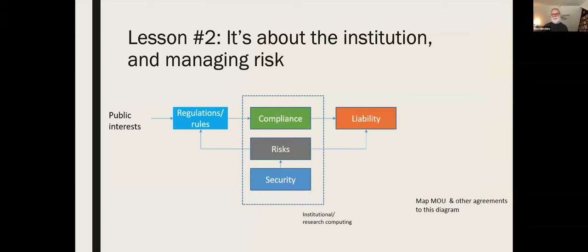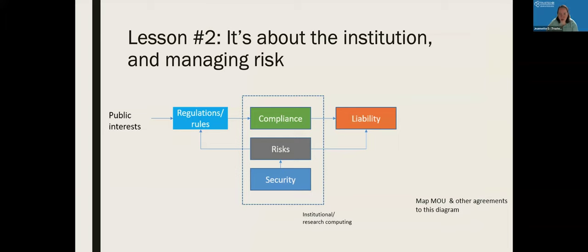How does UVA handle the 'no foreign national' requirement of federal contracts involving CUI? Since our CUI hosting was done on campus by us, we had to ensure that none of our personnel were foreign nationals. That was part of our certification going through the NIST 800-171 process with our outside third party.